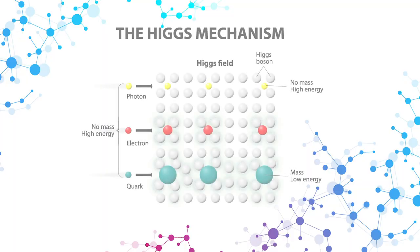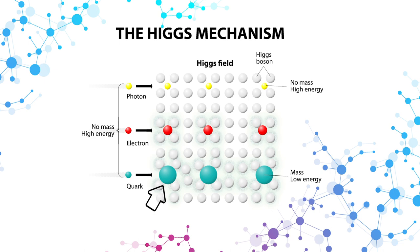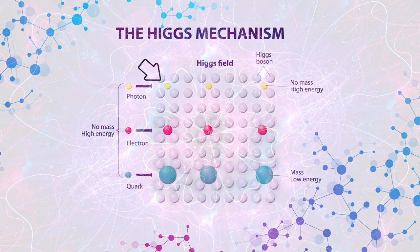Similar to the viscous pool of molasses, the Higgs field creates different levels of resistance through its interactions with different particles. The larger the resistance the object experiences while moving through the Higgs field, the greater the mass the object will have. If the object experiences no resistance while moving through the Higgs field, then it won't have any mass.